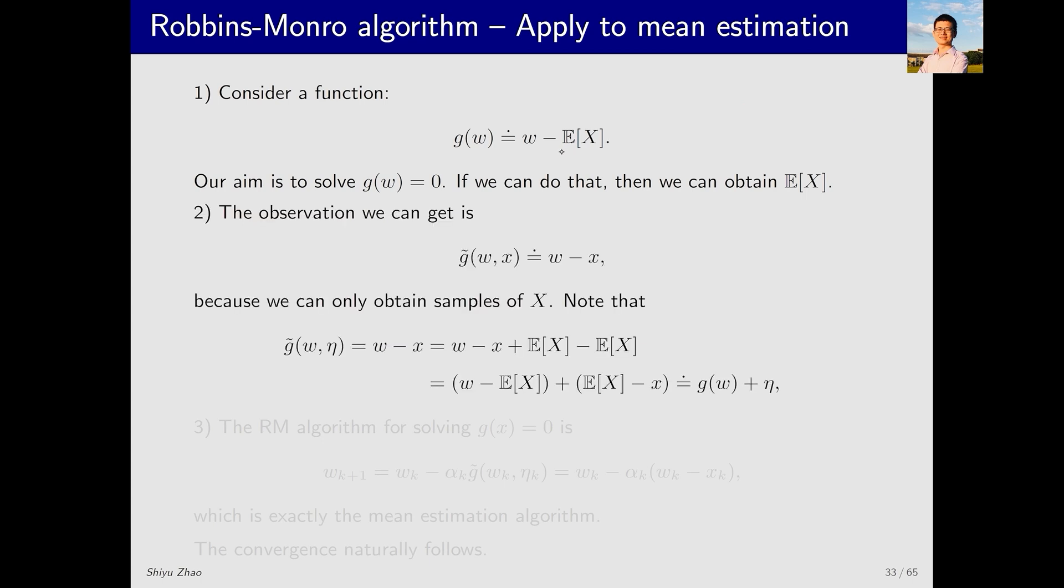Although we do not know this expectation, we can sample x. Thus, what we measure is g tilde, which equals w minus x, where x is a sample of x. We can rewrite g tilde as g(w) plus an error eta.